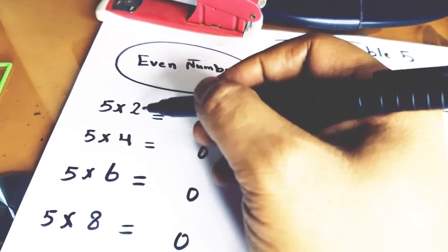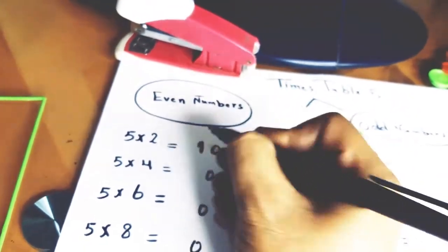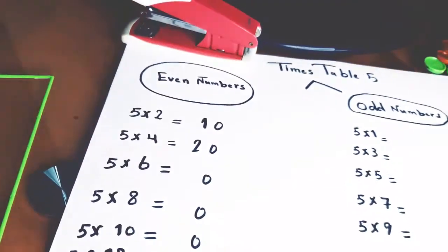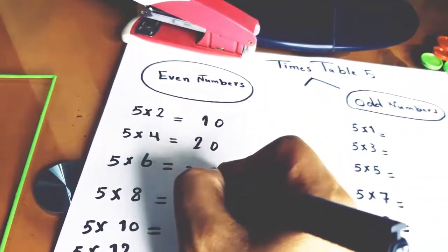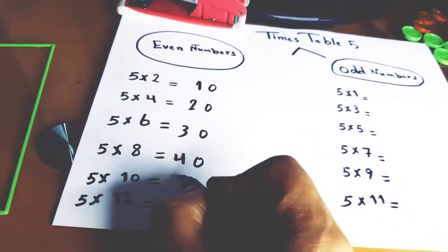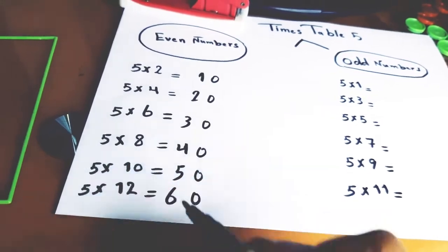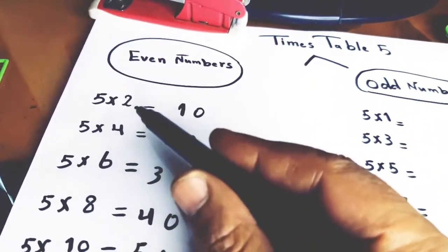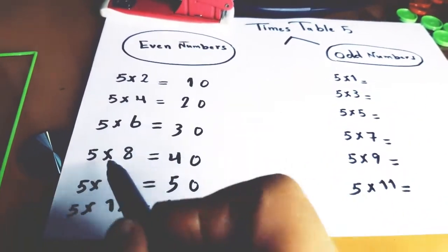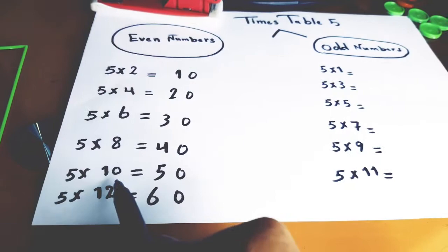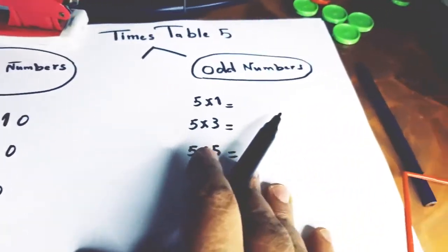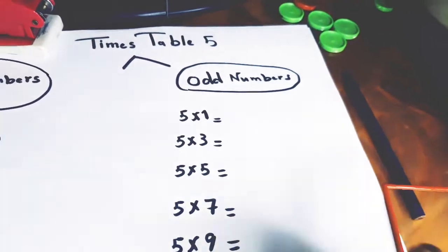Then we divide the even number by 2: 2 ÷ 2 = 1, 4 ÷ 2 = 2, 6 ÷ 2 = 3, 8 ÷ 2 = 4, 10 ÷ 2 = 5, 12 ÷ 2 = 6. So we have: 5×2=10, 5×4=20, 5×6=30, 5×8=40, 5×10=50, 5×12=60.